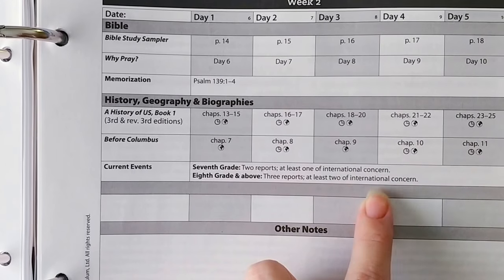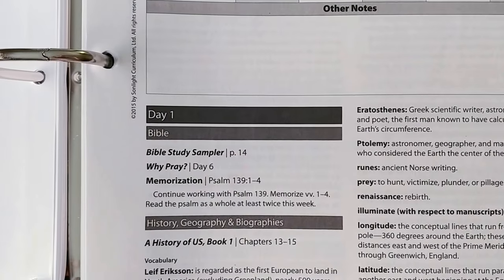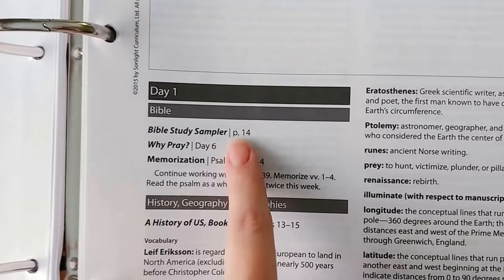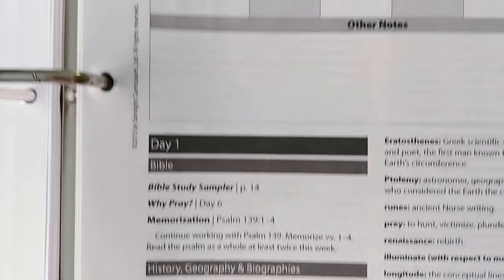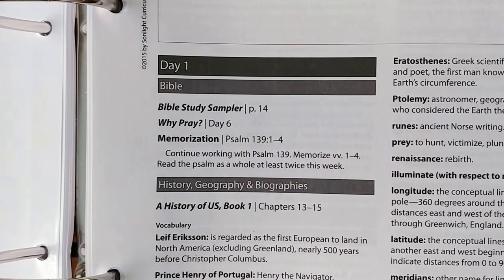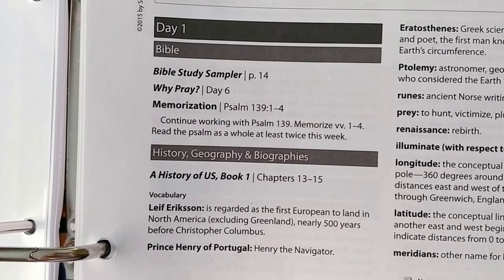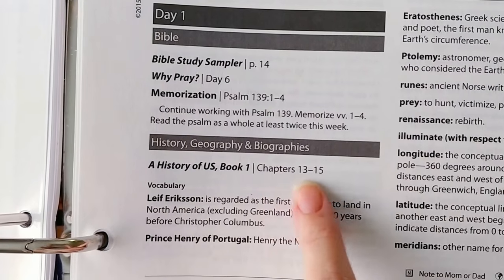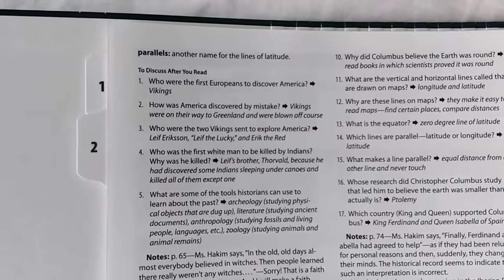Current events — my son loves doing current events, he's super excited about this. As you go down, they lay it all out for you. Day one has your Bible, gives you a little more notes, your history, geography, and biographies. Up here is your general lesson plans, and down here you have each day and each subject laid out with exactly what your child is doing. He's going to be reading A History of US, book one, chapters thirteen and fifteen, and this is the vocabulary you should be going over with him or her.